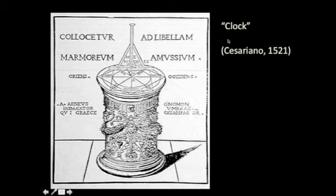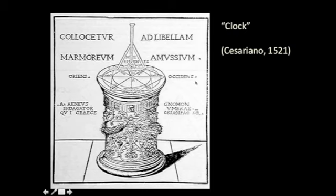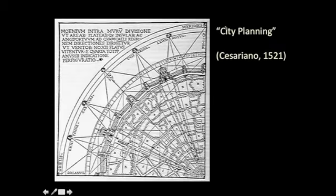Vitruvius covers clocks and city plans. Notice that a lot of these things look exactly the same — a round thing with a radial disposition of parts: water screw, clock, city. Much of that has to do with the strong connection between Roman thought and Greek thought, and the idea that certain geometrical forms were ideal and carried special meanings — particularly the circle as a diagram of the cosmos.